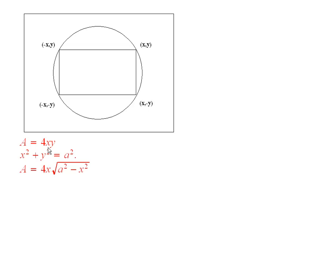So now, the 4xy has become 4 times x, and then this is the y: the square root of a squared minus x squared, because that's what I would get if I solved this for y.